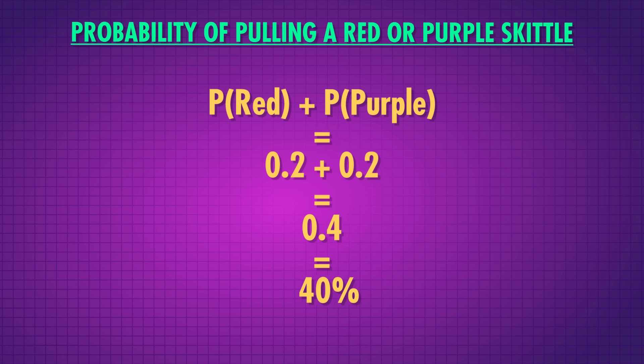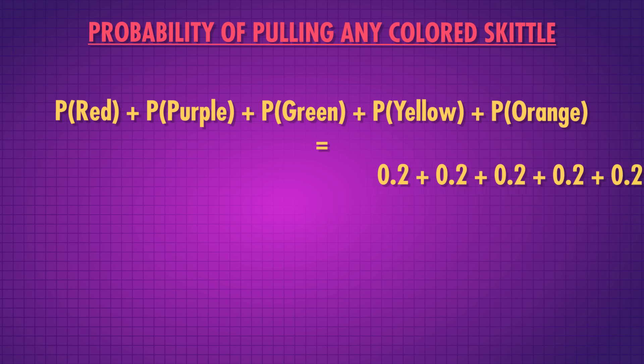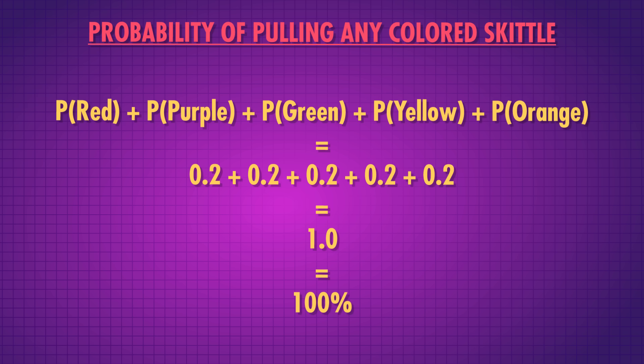P of red or purple is .2 plus .2, which equals .4 or 40%. I like all Skittles, so the probability I will get a Skittle I like is .2 plus .2 plus .2 plus .2 plus .2 — that's a hundred percent. Good odds.